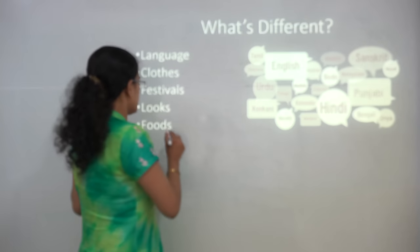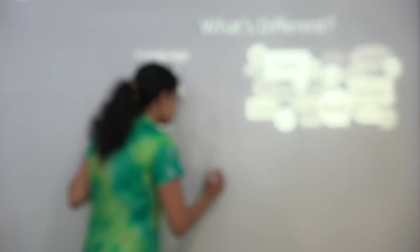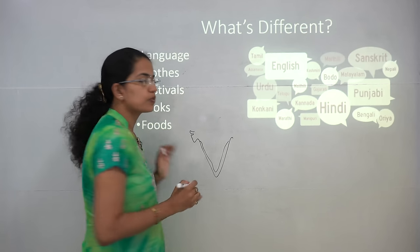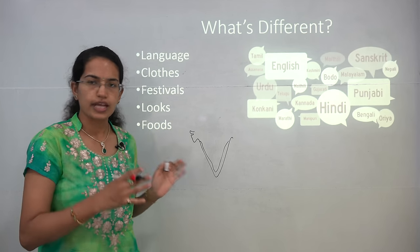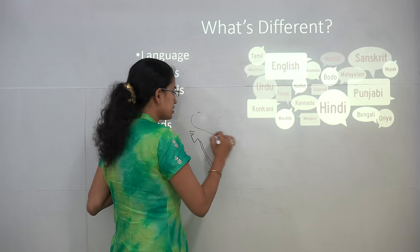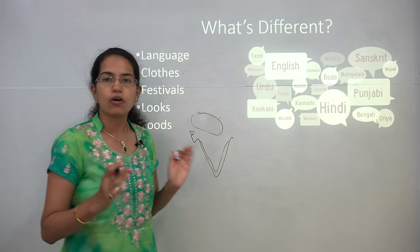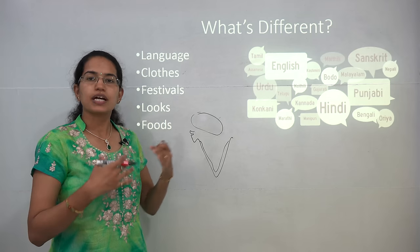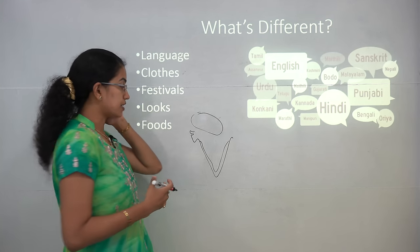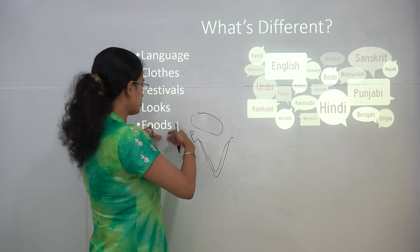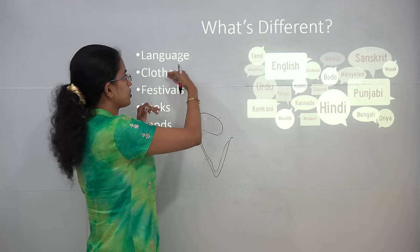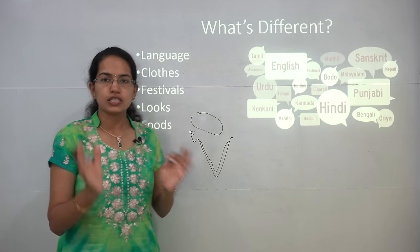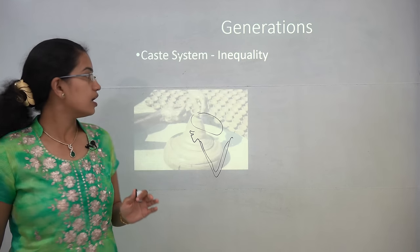A person living near a coastal area might have a predominant food of fish or rice, while a person in the northern plains might have wheat as their staple food. So there are differences in foods, looks, festivals, clothing, and language that are seen across a region or area.